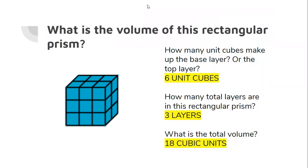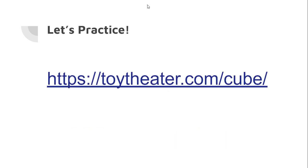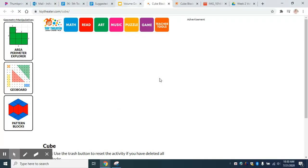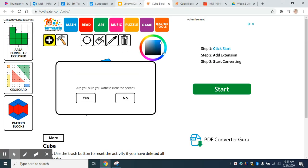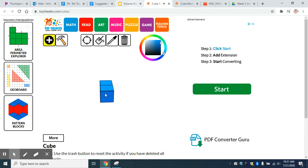So before we end, I do want to go back. What if we did an irregular shape? So let's look. What if I gave you something that looked like this?